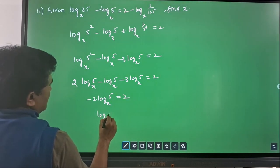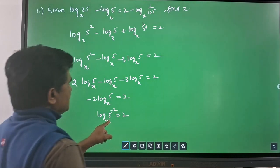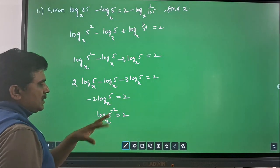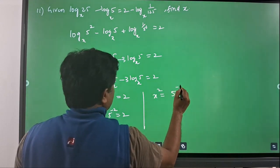So, this will be log 5 power minus 2 with base x is equal to 2. If you bring this logarithmic term in terms of exponential form, you have x power 2 is equal to 5 power minus 2.